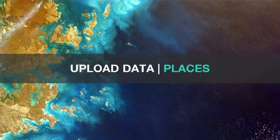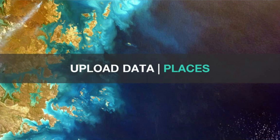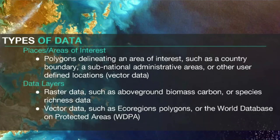Next, let's turn to adding spatial data to your workspace. We will talk about two different types of data: places and layers. This part might be a little challenging if you have no GIS background, but I will show you step by step. To add data, you must be an owner, admin, or editor. The first type is places, or areas of interest — these will always be vector data, such as a polygon boundary of a country or a protected area. The second option is data layers, which can be either raster or vector data.